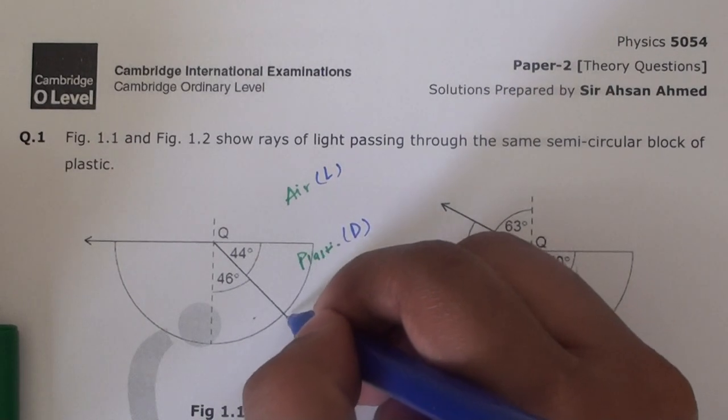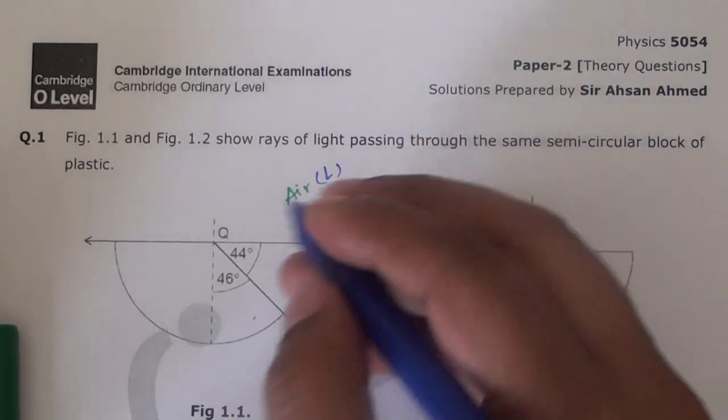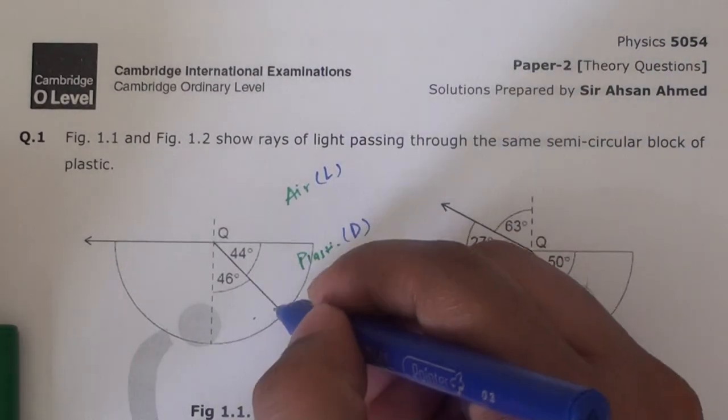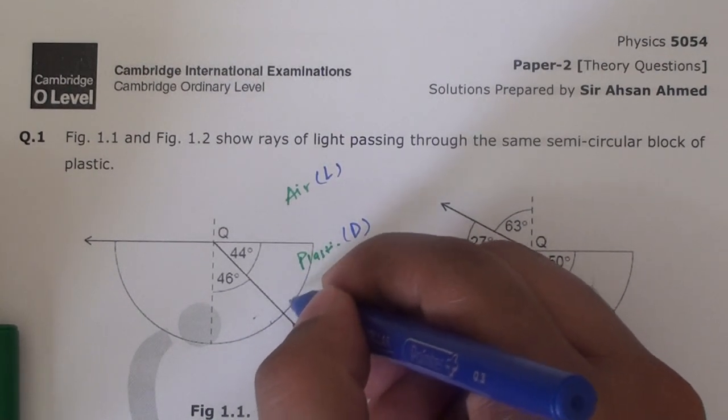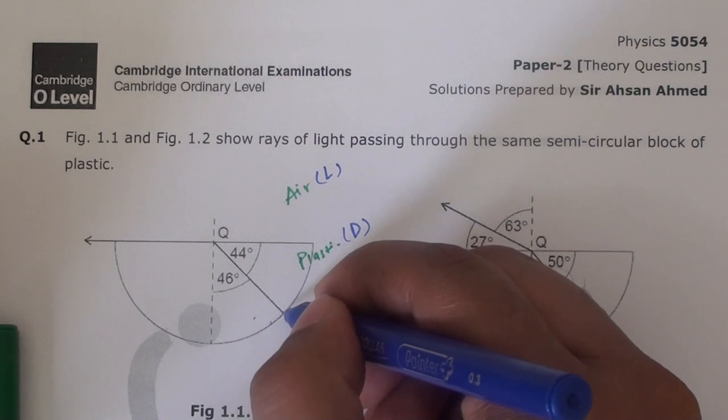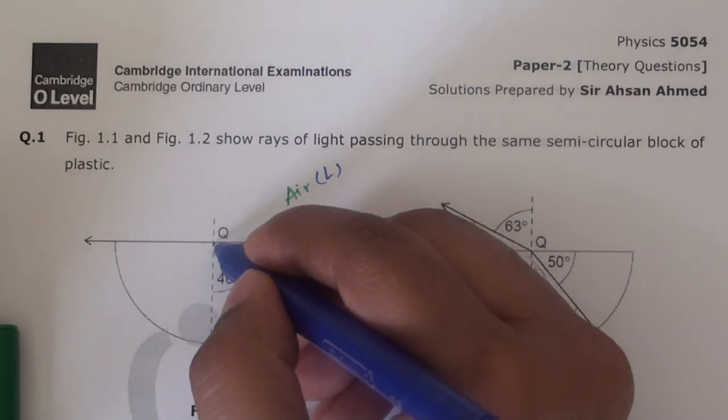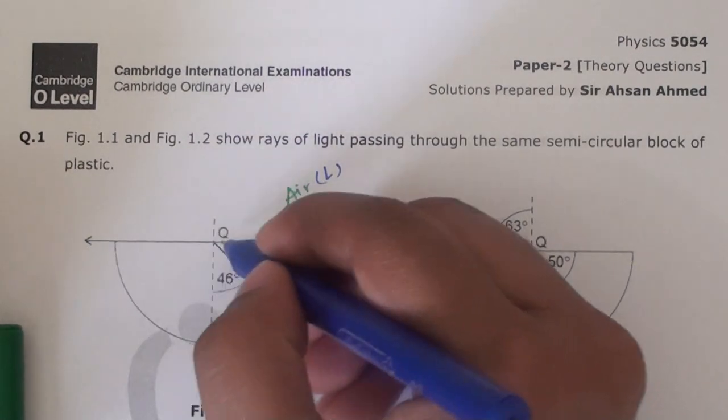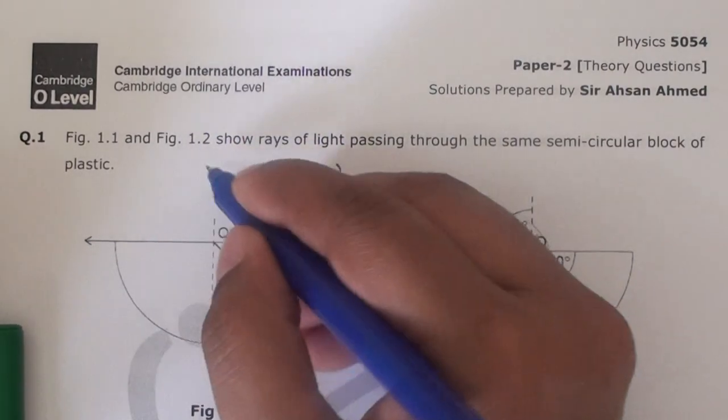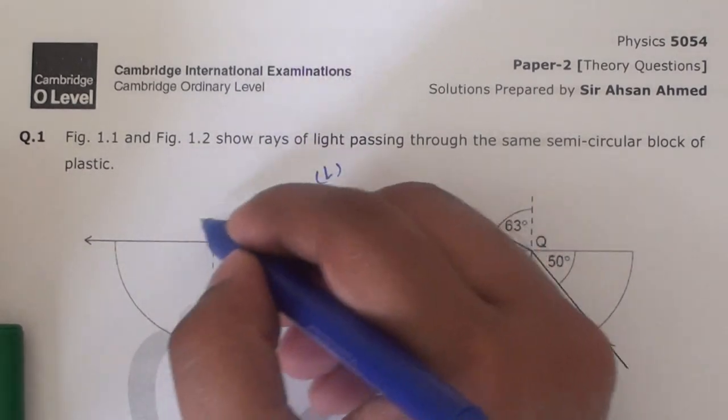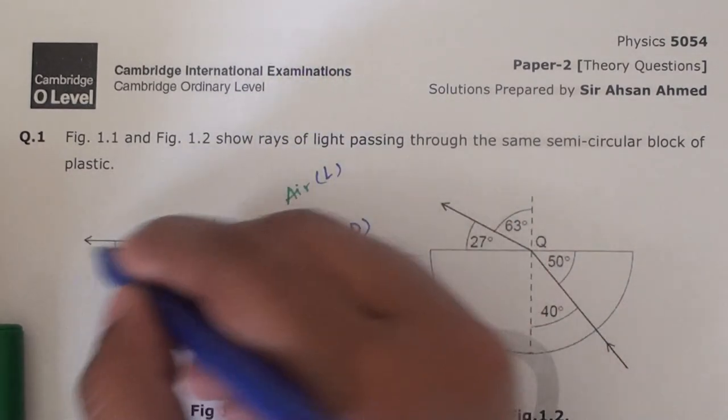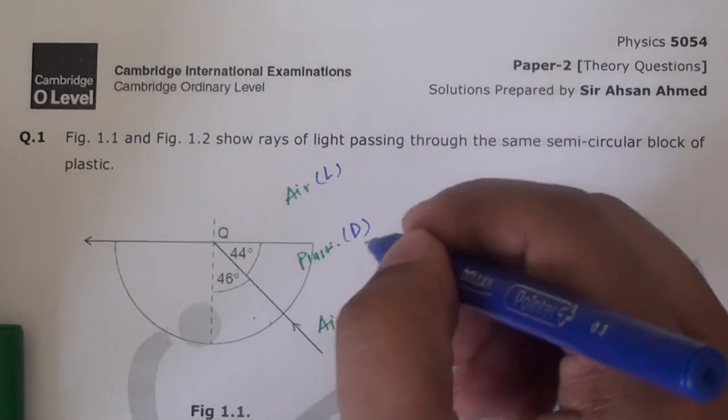There is refraction occurring here, but since they have not given any angles here, you are not required to do anything here but rather you are required to do something here. By the way, there is light refracting here and light going that way - something unfamiliar. Let's see how it works.